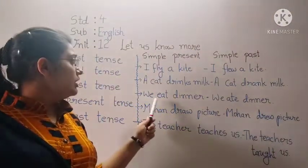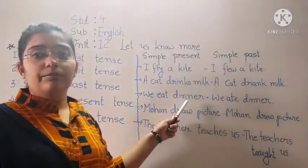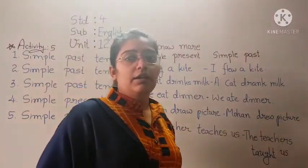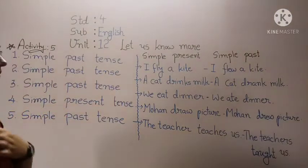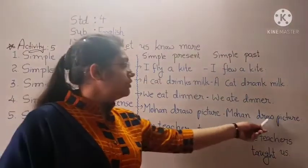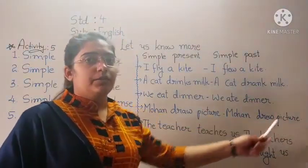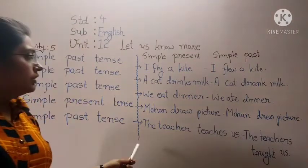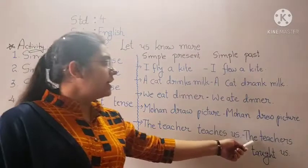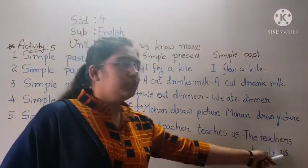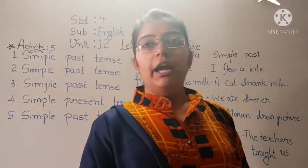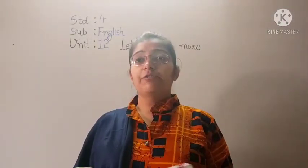Number 3: 'We eat dinner.' The past answer is: We ate dinner. Number 4: 'Mohan draws a picture.' Past: Mohan drew a picture. Number 5: 'The teacher teaches us.' Past: The teacher taught us. So Activity 5 has been completed.